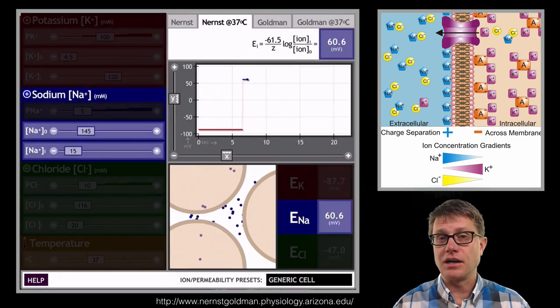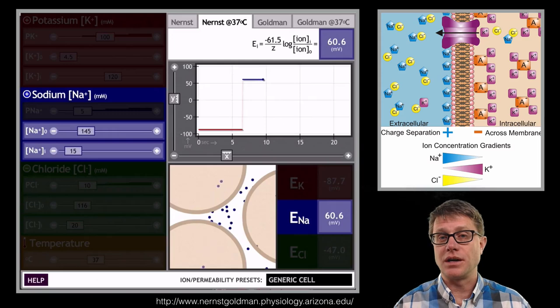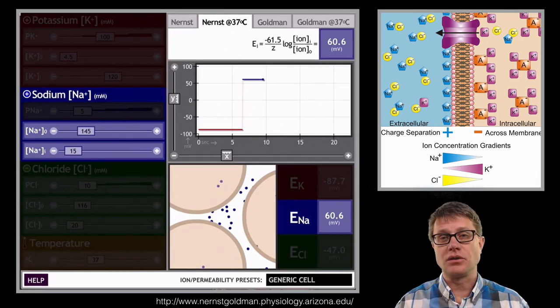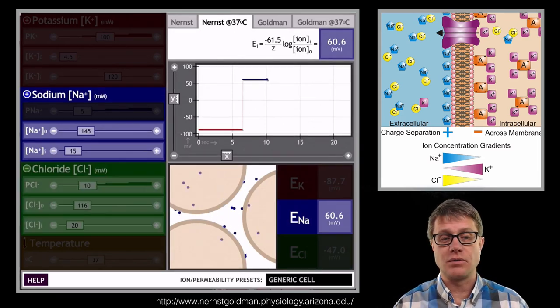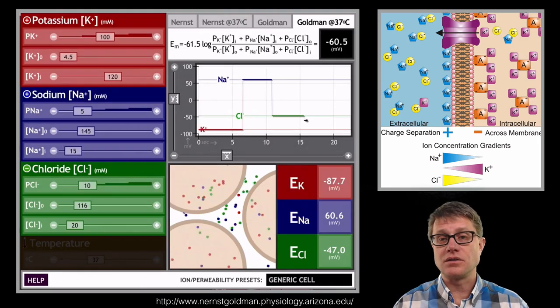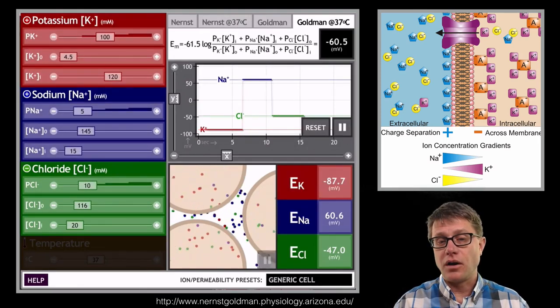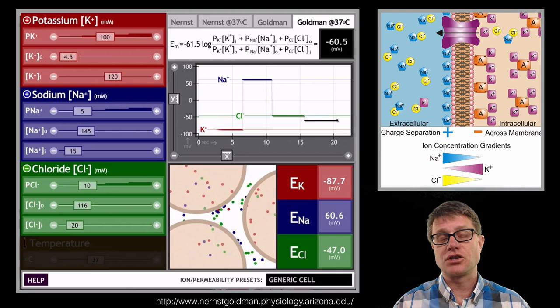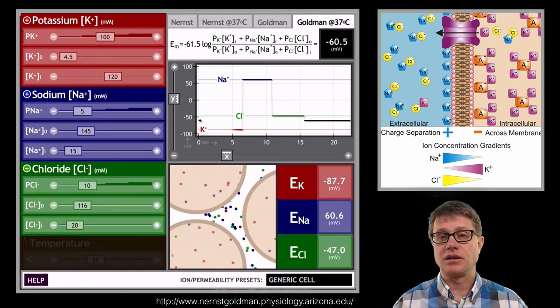We could do the same thing with other big ions like sodium. We will have more sodium on the outside. And we could get a potential or a voltage there. We could do the same thing with chloride ions as well. Or we could run the Nernst, or the Goldman equation rather, with all of these ions. And it is going to show us what the voltage of that generic cell is going to be.